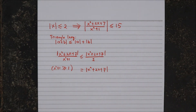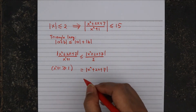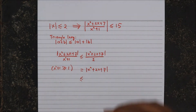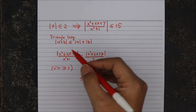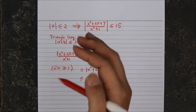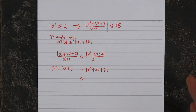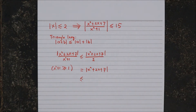At this point, we need our triangle inequality. The triangle inequality is not only true for two terms a plus b, but it can be extended: the absolute value of a plus b plus c will be less than or equal to the sum of the absolute values of each of the terms.